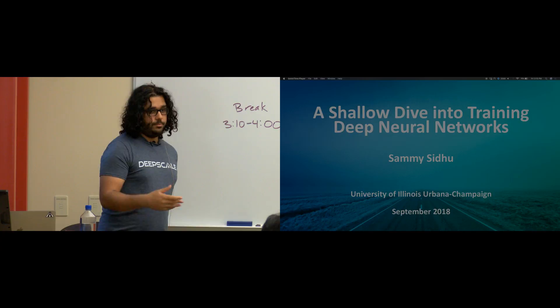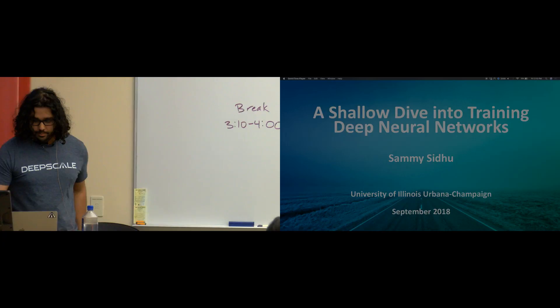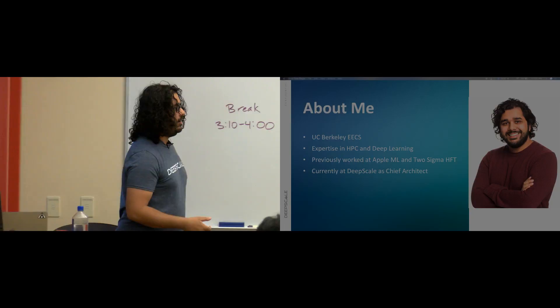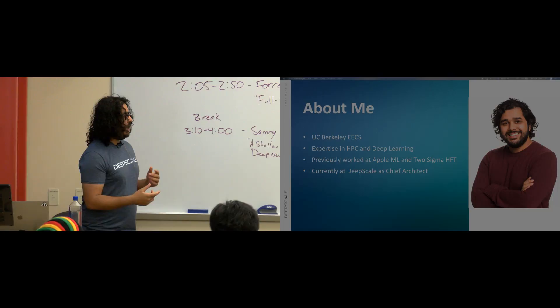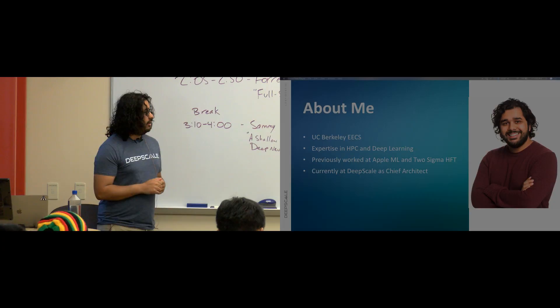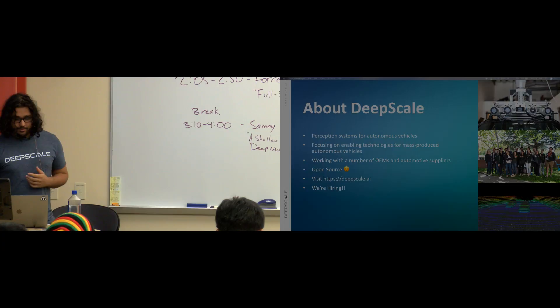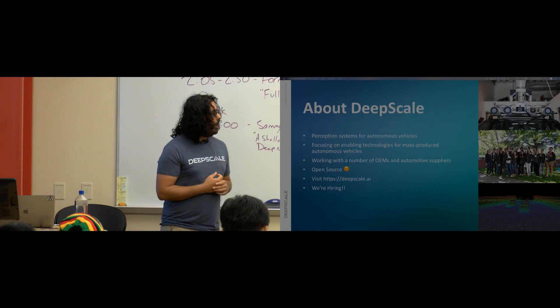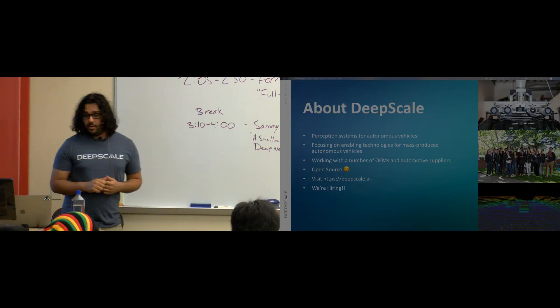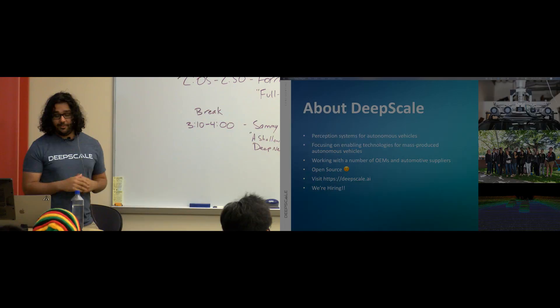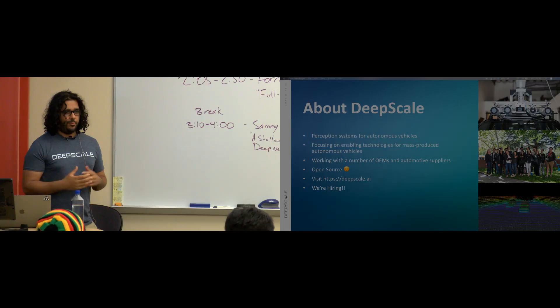About me: I graduated from Berkeley studying electrical engineering and computer sciences. My background was in high performance computing and supercomputing, as well as deep learning and AI. Before this, I worked at Apple doing ML and at Two Sigma doing high frequency trading. Currently I'm the chief architect at DeepScale, where we build perception systems for autonomous vehicles — specifically for mass-produced vehicles, something you would actually drive to work or school. We work with a number of OEMs and suppliers.